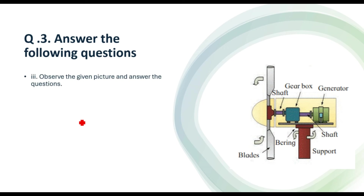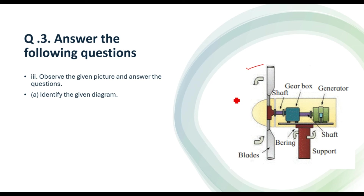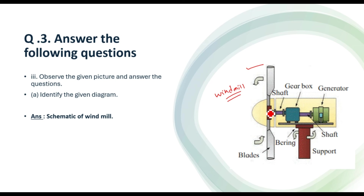Question three: Observe the picture and answer the following. A diagram is given from the textbook. Question: Identify the given diagram. Students should not just write 'windmill' — strictly follow what the textbook says. The correct answer is 'schematic of windmill.' It is not an actual windmill but a diagram or structure. The word 'schematic of windmill' is very important — if you write only 'windmill,' you will not get full marks.